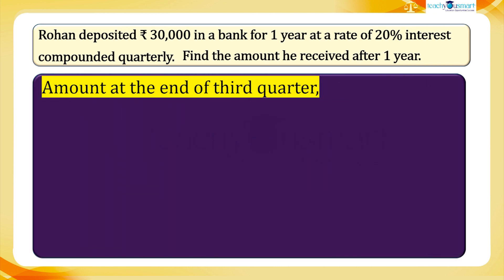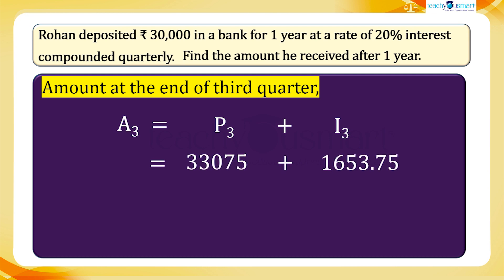Then the amount at the end of the third quarter: A3 equals P3 plus I3, equals 33,075 plus 1,653.75. A3 equals 34,728.75 rupees. This is the principal for the fourth period.